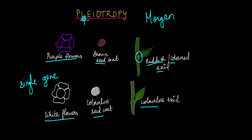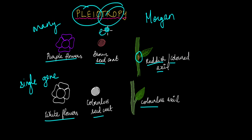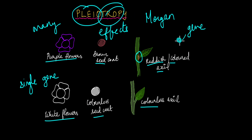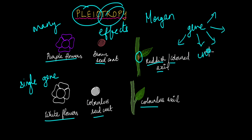This is an example of pleiotropy. 'Pleio' means many and 'tropy' means effects. This is a Greek word which describes a phenomenon where there is a single gene that controls multiple traits or multiple characteristics — seemingly unrelated characteristics as well.